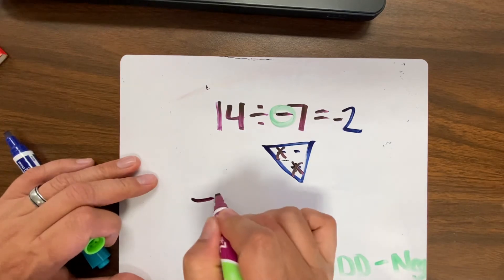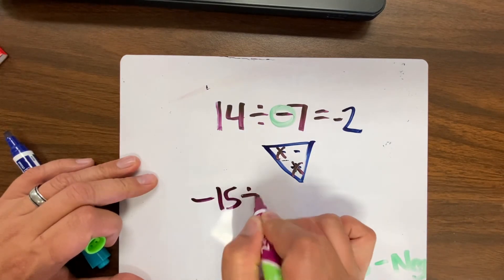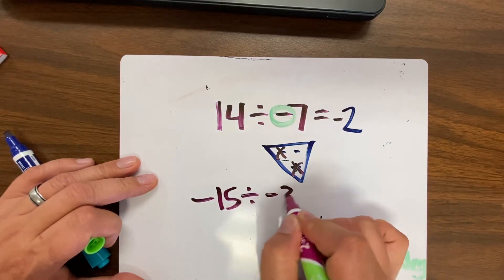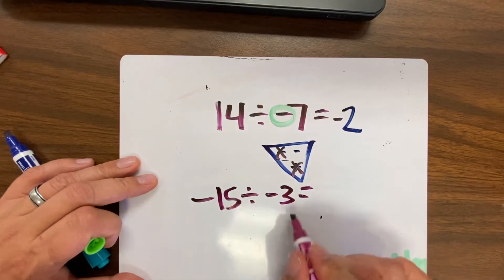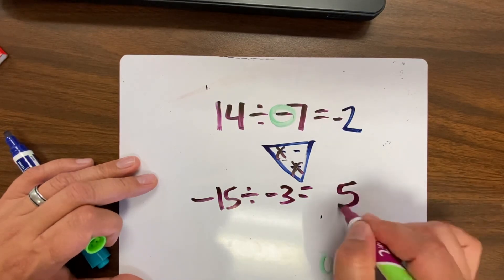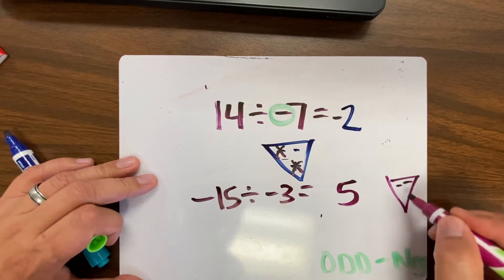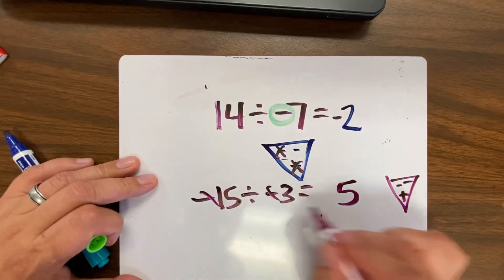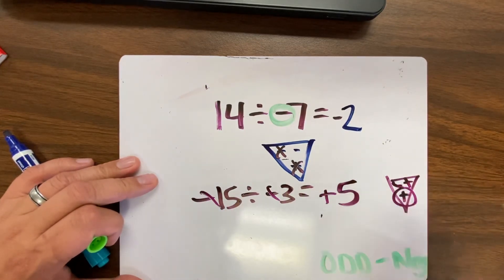And then if I said negative 15 divided by negative 3, 15 divided by 3 is 5. The first one is a negative. The second one is a positive. So negative, negative. My answer would be positive.